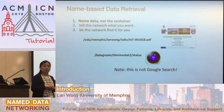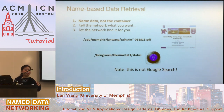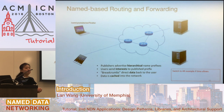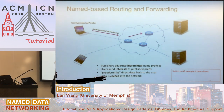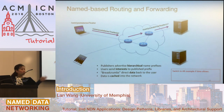However, people often confuse this with Google search — it's really not Google search. The network is not searching everything related to temperature for you; it's based on the specific name. Producers that produce content advertise their names to the network. Whoever needs to retrieve data sends an interest with the name — for example, the trailer for Star Wars — and the network forwards the interest based on these names. The routers know how to forward them because the names have been advertised.